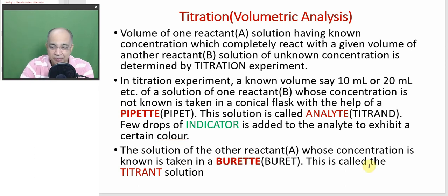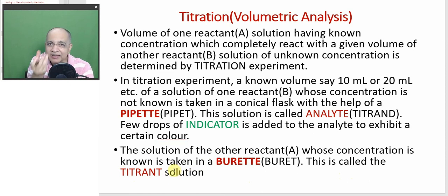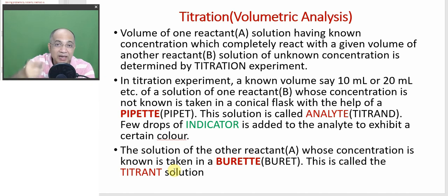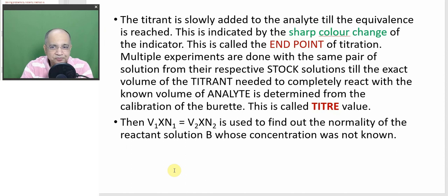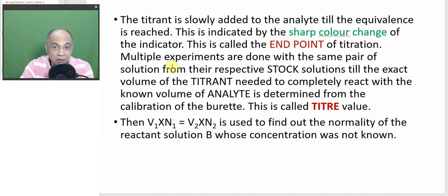The analyte is taken in a conical flask with the help of a pipette, and the titrant is taken in a burette — a long tube, open at one end, with a control system at the other end where you can add the titrant as per your wish. The titrant is slowly added to the analyte till the equivalence is reached. This is indicated by a sharp color change of the indicator. This is called the end point — the end of titration.